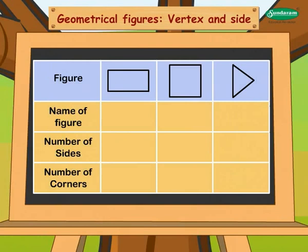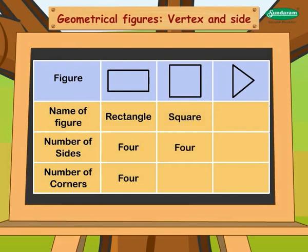This is a rectangle. It has four sides and four corners. This is a square. It has four sides and four corners. This is a triangle. It has three sides and three corners.